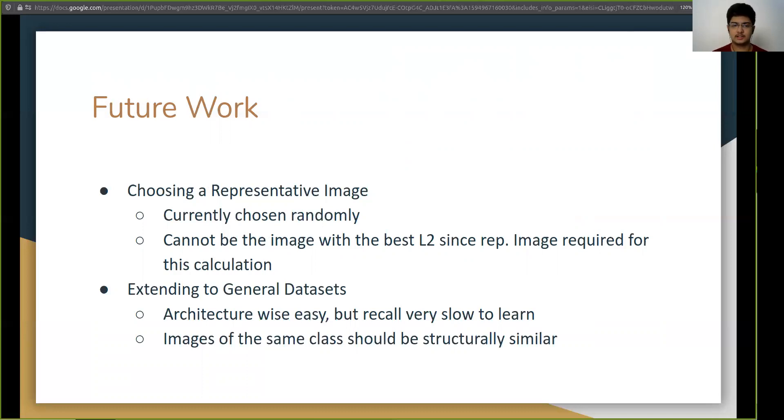Then the second and more problematic issue is the extension to general datasets. Now architecture wise, it's very easy. So you just need to replace the softmax layer with the dense layer. However, this has an inherent assumption that the images of the same class should be of the same type. So a digit 9 appears as a digit 9 with very little structural modifications. But if you take it to CIFAR or ImageNet and if you take the label dog, then a German Shepherd and a Terrier are both dogs but they are structurally very different. And so a representative image for German Shepherd won't work for a Terrier. I am not saying it can't be done. There must be a way where there are multiple representative images for the same label. So it can be done but we leave it as a part of future work.